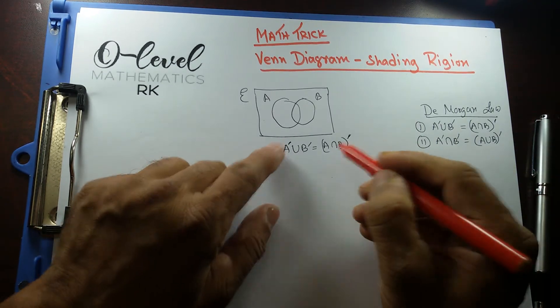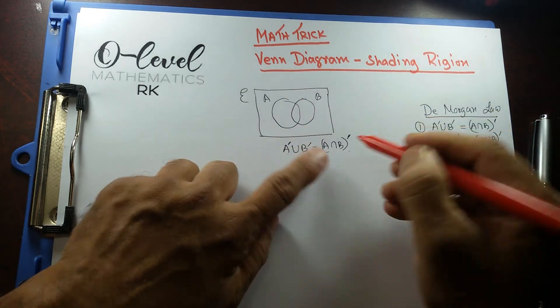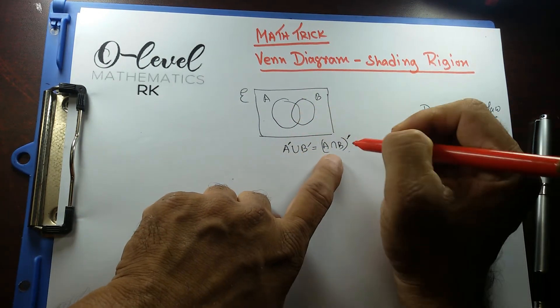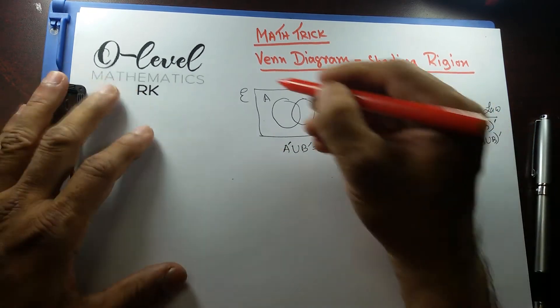Now, I know what is A intersecting B. A intersecting B is only this part over here.